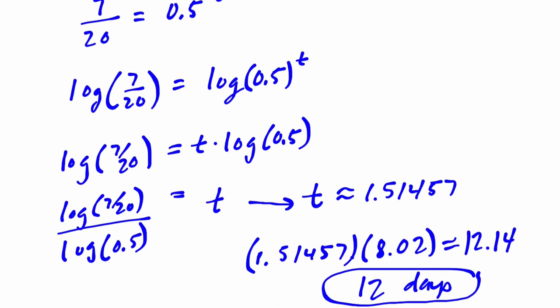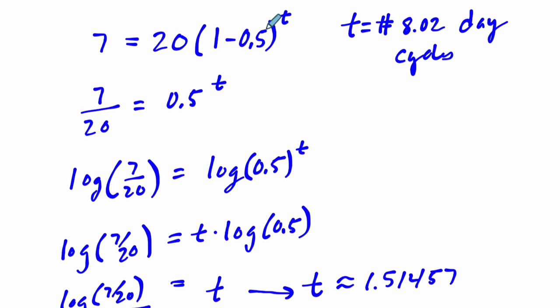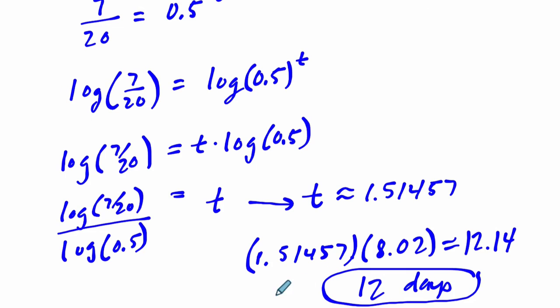Of course, there are many ways to solve this. And a variation, a more typical variation on this thinking. I'll solve it three ways. Our second way would be to say, okay, we need to end it with 7. We start off with 20. And we're taking half-life. So it's 1 minus 0.5 again, that's written as a half. And instead of letting T equal 8.02 day cycles, you can say T divided by 8.02.